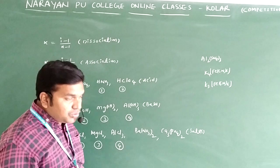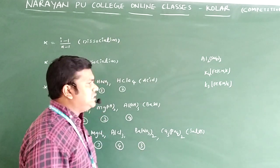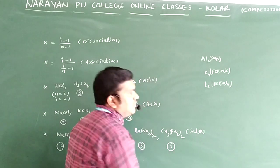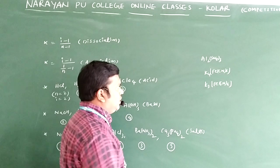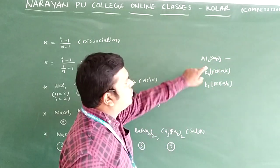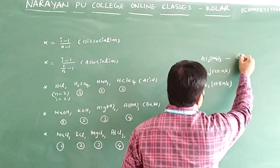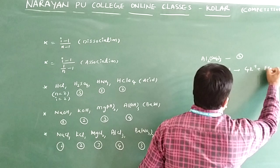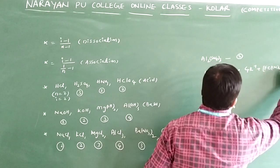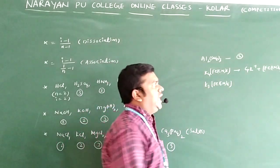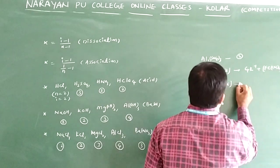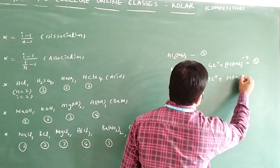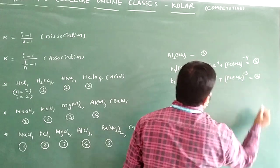Ba(NO₃)₂ → Ba²⁺ + 2NO₃⁻, giving 3 ions so i = 3. Ca₃(PO₄)₂ → 3Ca²⁺ + 2PO₄³⁻, giving 5 ions so i = 5. Al₂(SO₄)₃ → 2Al³⁺ + 3SO₄²⁻, giving 5 ions so i = 5. K₄[Fe(CN)₆] → 4K⁺ + [Fe(CN)₆]⁴⁻, giving 5 ions so i = 5. K₃[Fe(CN)₆] → 3K⁺ + [Fe(CN)₆]³⁻, giving 4 ions so i = 4.